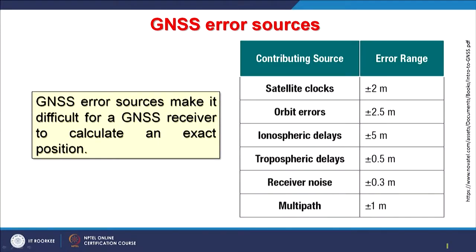GNSS error sources basically make it difficult for a GNSS receiver to calculate an exact position. No matter how you improve the system, there will always be errors. The problem is that we do not have a standard to compare how accurate we are. Only using GDOP or any other concept, we say we are accurate to a certain range. We are achieving accuracy nowadays up to millimeter by using differential or RTK GPS, or 2 centimeter by SBAS technique.